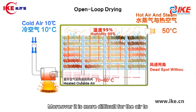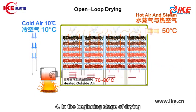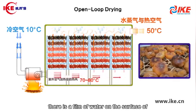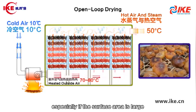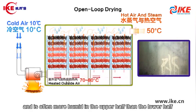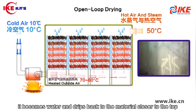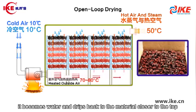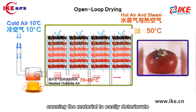Moreover, it is more difficult for the air to reach the whole drying house and achieve uniform drying effects. Fourth, in the beginning stage of drying, there is a film of water on the surface of the material that can easily cause mold to grow, especially if the surface area is large. The drying house becomes filled with moisture, and is often more humid in the upper half than the lower half. When the moisture in the upper half reaches the top, it becomes water and drips back to the material, making drying difficult and uneven and causing the material to easily deteriorate.